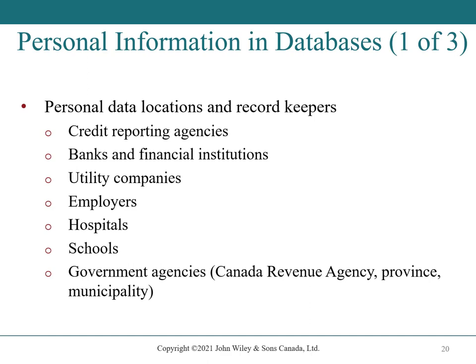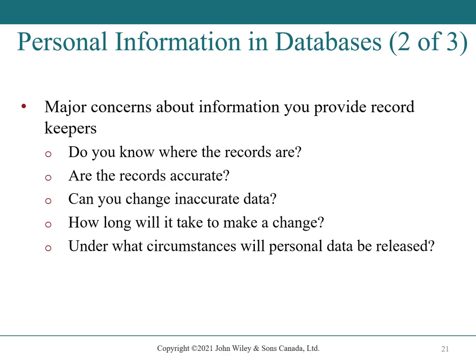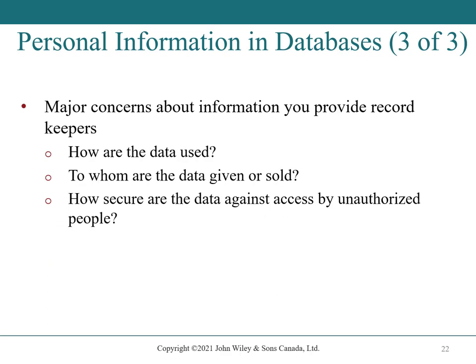Personal information and databases. Personal data locations and record keepers include credit reporting agencies, banks and financial institutions, utility companies, employers, hospitals, schools, and government agencies such as the CRA or provincial or municipal governments. Major concerns about information provided to these record keepers include: Do you know where the records are? Are the records accurate? Can you change inaccurate data? How long will it take to make a change? Under what circumstances will personal data be released? How are the data used? To whom are the data given or sold? And how secure are the data against unauthorized access?